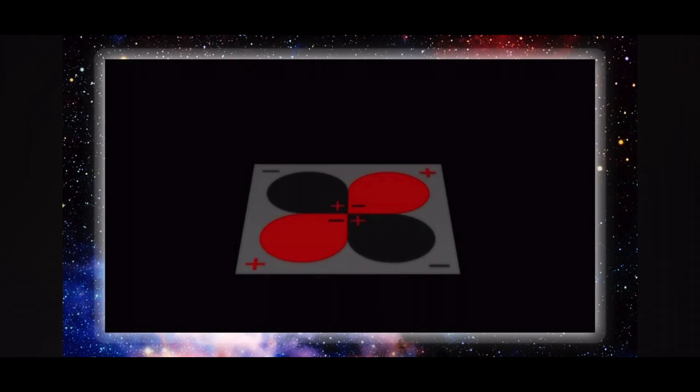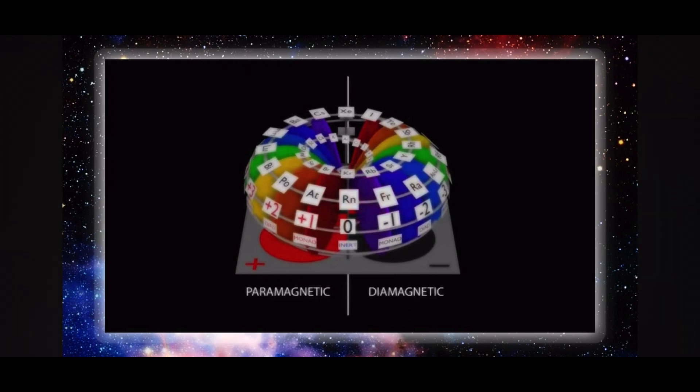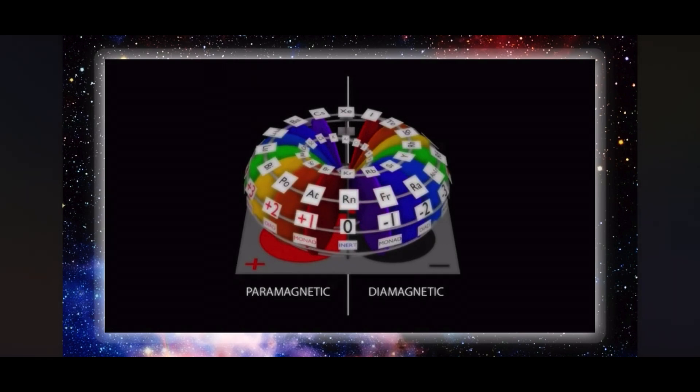The underlying ground plane on which the torus is placed accurately defines their positive and negative elemental charge. This ground plane also demonstrates the paramagnetic and diamagnetic character of the elements.